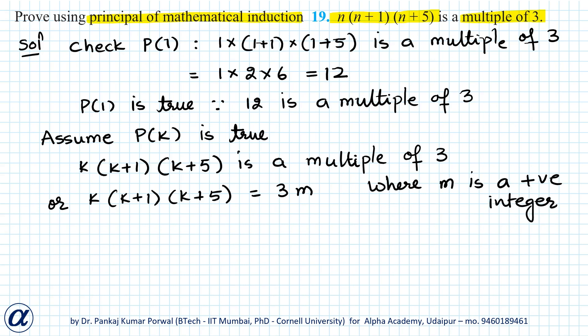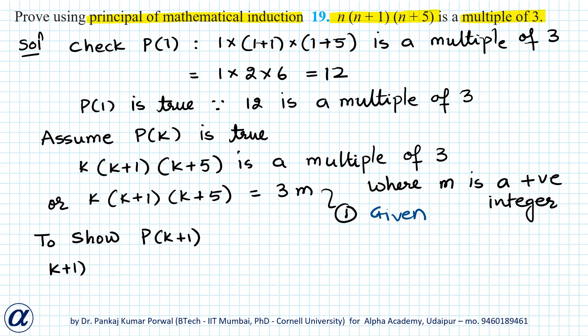Using equation 1 as given, we have to prove P(k+1). To show P(k+1), I write the statement for P(k+1) by substituting n = k+1 in the given expression. So k+1 in place of n, k+2 in place of n+1, and k+6 in place of n+5 is a multiple of 3.